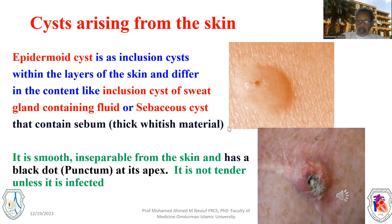It is difficult to demonstrate a transillumination test because of the thick material, and difficult to do a fluctuation test because it is small. However, if it gets inflamed, it will become tender and it might rupture, releasing this whitish thick material.